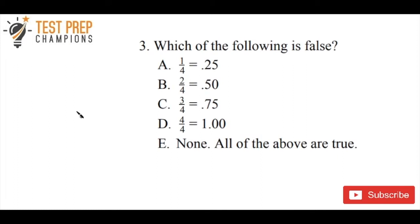Today's question is about fraction and decimal equivalence. Go ahead and pause the video if you'd like to try to figure this out on your own. The question is: which of the following is false? 1/4 equals 0.25, 2/4 equals 0.50, 3/4 equals 0.75, 4/4 equals 1, or E — all of the above are true.